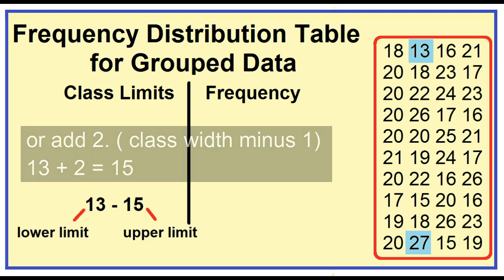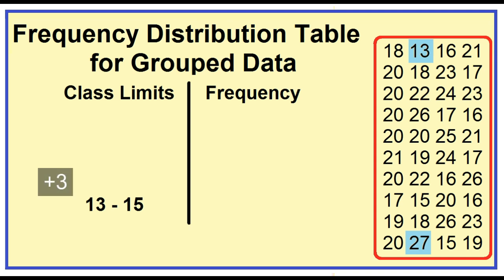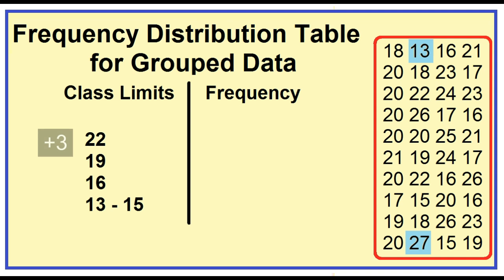The left number is the lower limit and the right number is the upper limit. To get the next lower limit, just add the class width to the previous lower limit. 13 plus 3 is 16, 16 plus 3 is 19, 19 plus 3 is 22, 22 plus 3 is 25.